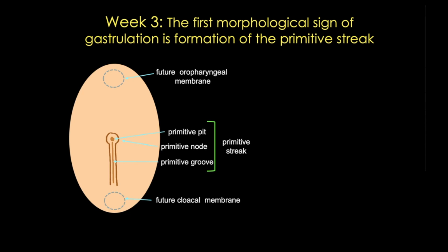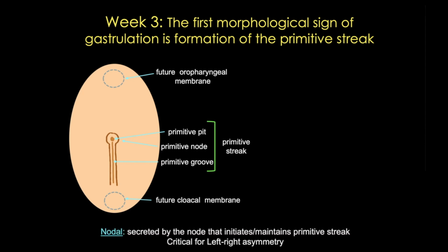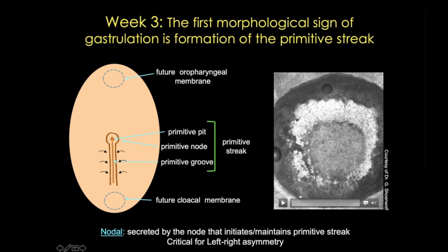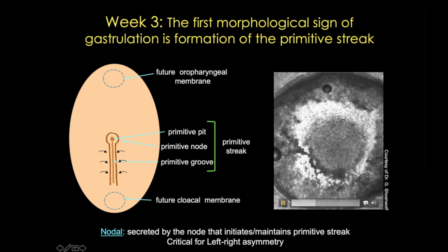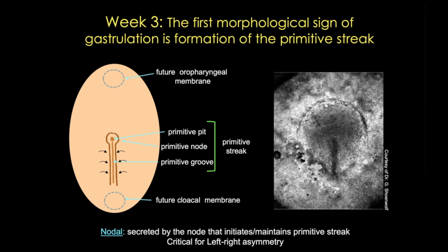The primitive node is critical for establishing the left-right axis of the embryo and involves a gene appropriately called nodal. Nodal is also critical for upregulating genes involved in formation of mesoderm subtypes. The primitive streak indicates cells are moving into the embryo to form additional germ layers. The primitive pit and groove are where epiblast cells leave the primitive streak and move into the interior to become the definitive endoderm and mesoderm. Dr. Gary Schoenwolf's chick video shows primitive streak formation and the beginning of gastrulation.